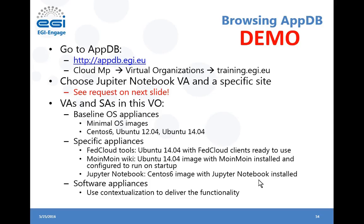These images are very useful when you want to create a new image or deploy something new in the cloud. There are also specific appliances, for example the appliance containing the FedCloud tools, which you can start with all the tools already available. Other specific appliances include the Moin Moin wiki and the Jupyter Notebook we are going to use. Software appliances are made of a virtual appliance and a virtual machine image plus some contextualization scripts to configure the virtual machine during boot time.